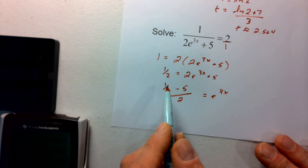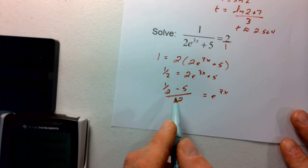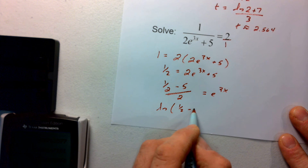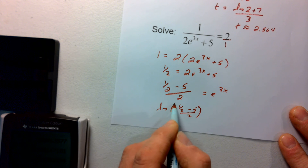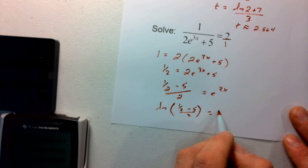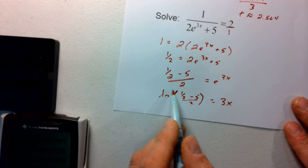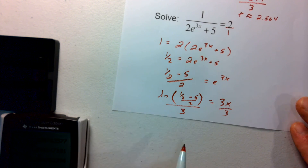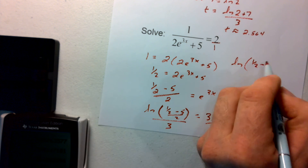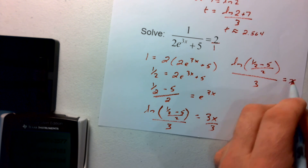This looks complex on the left side, but we'll use the calculator for the approximation, so we don't need to clean it up now. Taking the natural log of both sides, and when we take the natural log of e to the 3x, the 3x comes to the front, giving just 3x. Dividing by 3 gives the exact value: x equals the natural log of (1 half minus 5, divided by 2), all over 3.